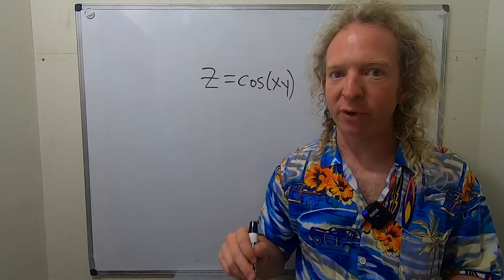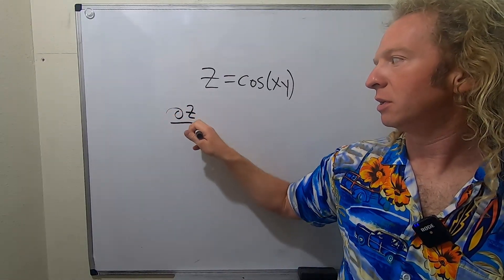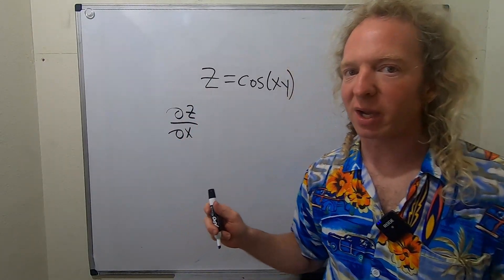So first, let's do the partial derivative with respect to x. So del z, del x, this is the partial derivative of z with respect to x.